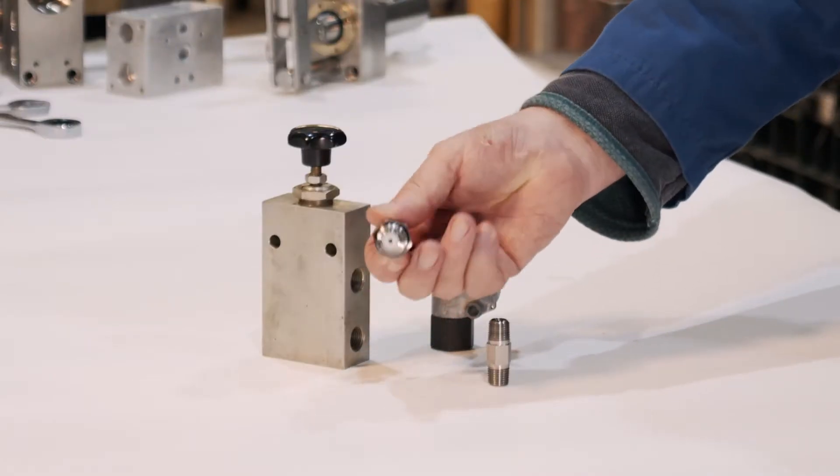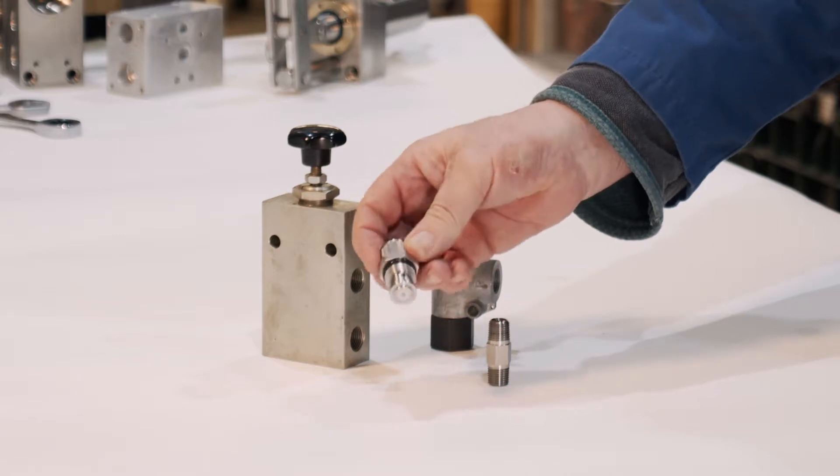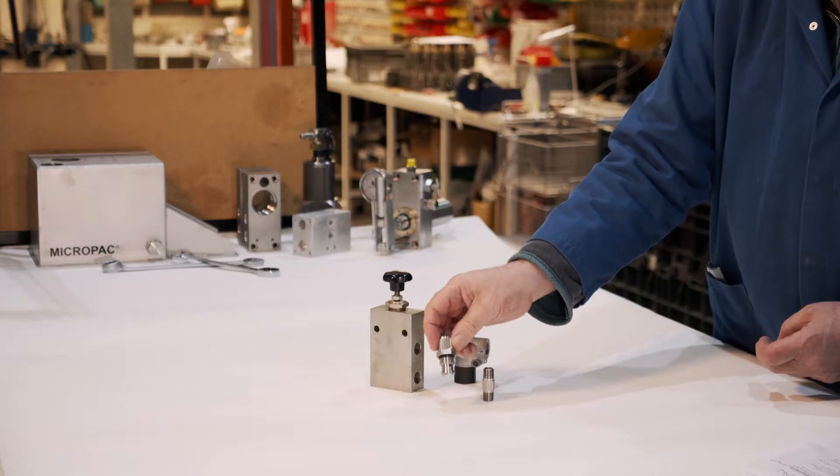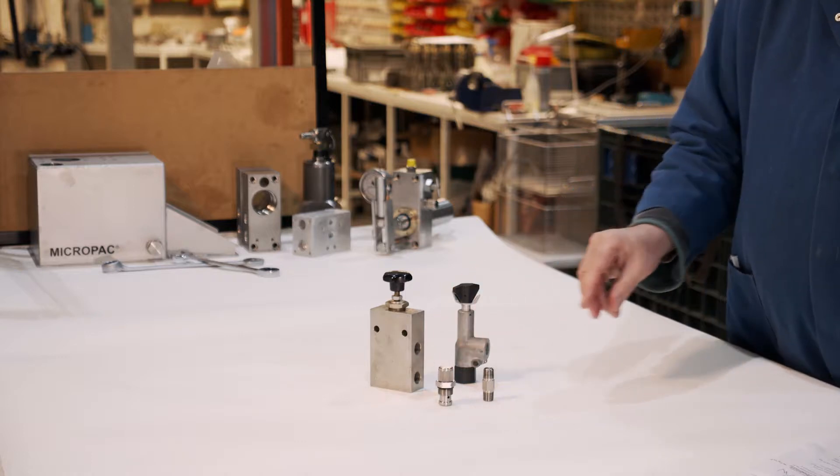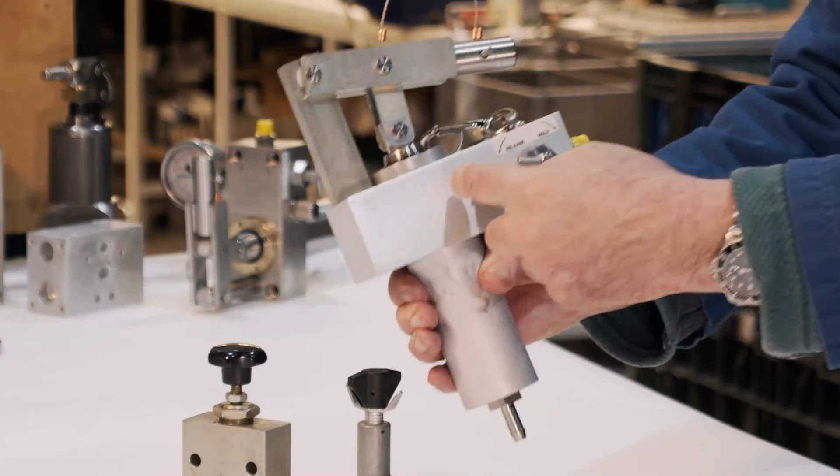And finally, here's a miniature cartridge relief valve. This one happens to be in 316 stainless that we use on our own MicroPAC pumps. We're fitting them in the side of the body like that.